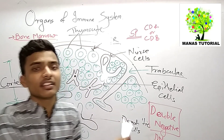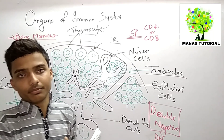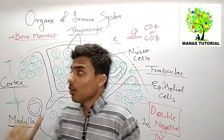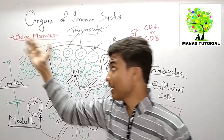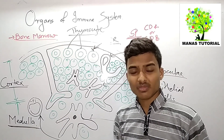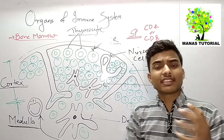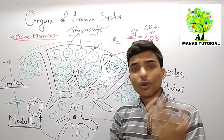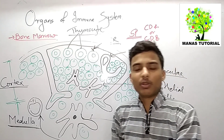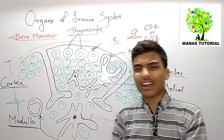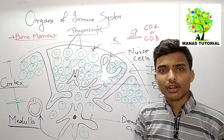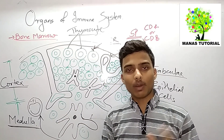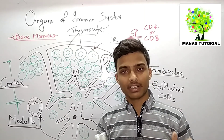The mature B cells synthesize antibodies and differentiate into plasma cells, memory cells, and effector cells to kill the antigen. This is all about the primary lymphoid organs, which consist of the bone marrow and the thymus. In the next video we will discuss the secondary lymphoid organs such as the spleen, lymph nodes, and mucosal-associated lymphoid tissue. Thanks for watching — if you like the video, please subscribe to the channel.